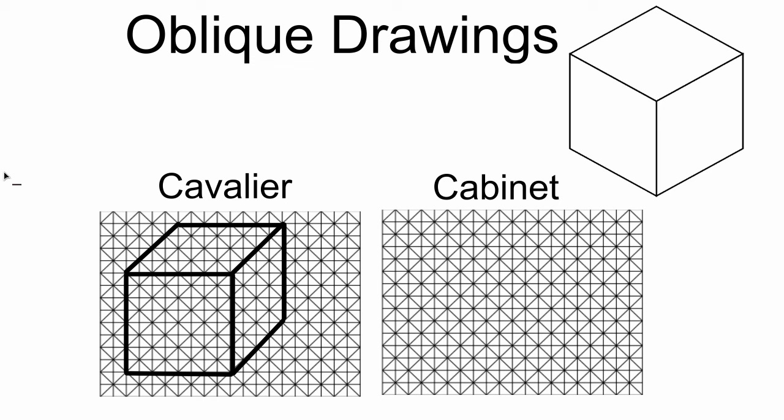Again, the front view is the exact same. It is just one inch by one inch in this case. But the depth is what changes. Now in a cabinet drawing, we still have the depth changing. But the difference here is that it's going to change by half, which gives us a more realistic looking image generally.